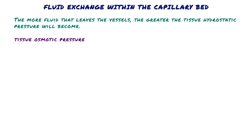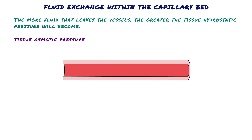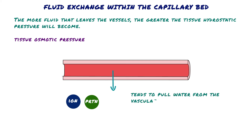The second force, tissue osmotic pressure, is exerted by proteins and ions within the interstitial space. This force tends to draw water from the vasculature into the surrounding tissue. This force is generally small, but should capillaries become leaky, allowing protein into the interstitial space, this force can become significant.